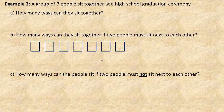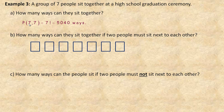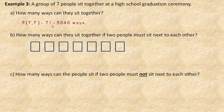Moving to example three: a group of seven people sit together at a high school graduation ceremony. The first question asks how many ways can they sit together in a row. We're arranging seven people using all of them, so it's a permutation of seven objects taken seven at a time — seven factorial. The first person can be chosen in seven ways, the next in six, then five, four, three, two, one, giving 5,040 ways for these people to sit in different orders.